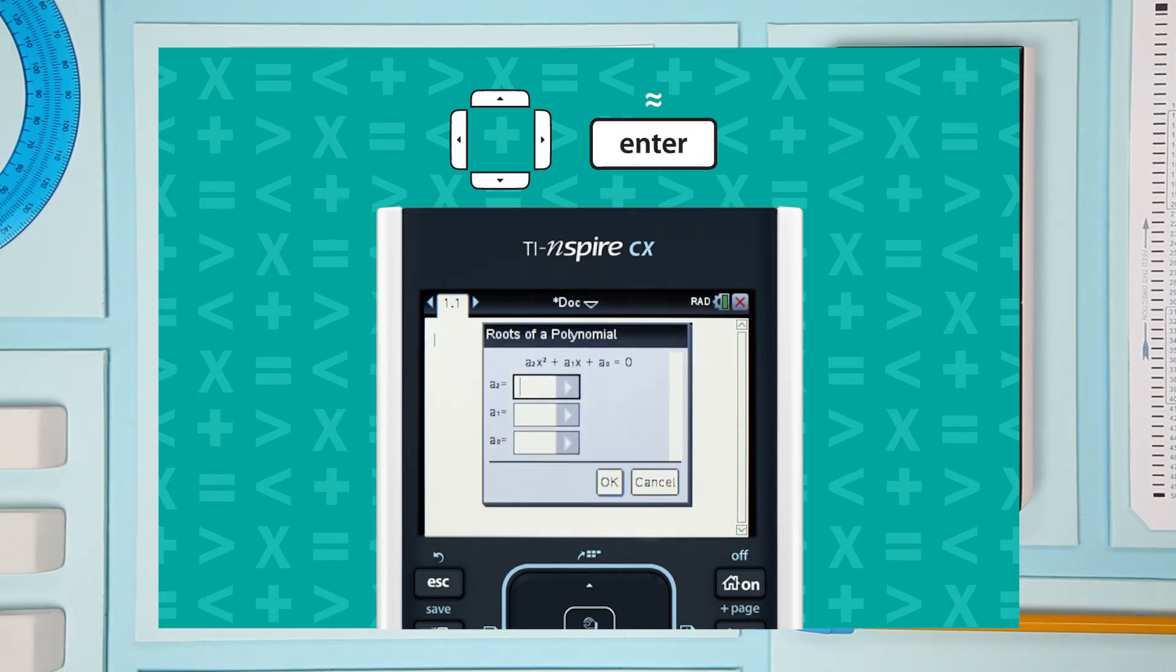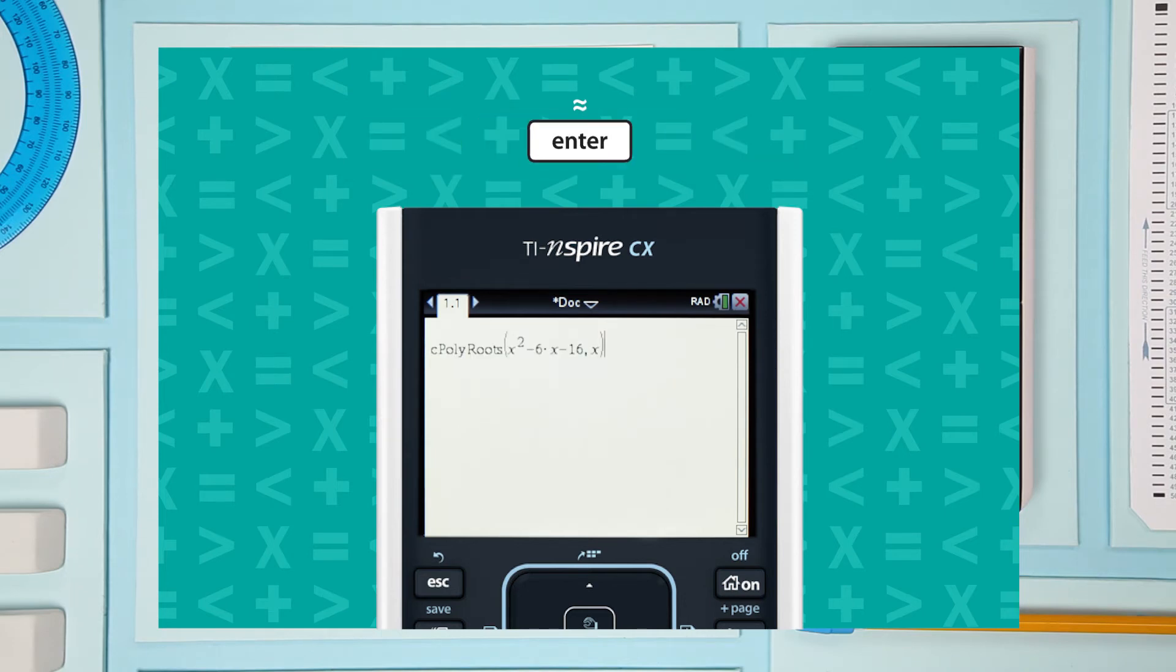Select OK to open the next dialog box and plug in your coefficients. 1, -6, and -16. Select OK. There's the equation. Press Enter. And now you have the roots. Negative 2 and 8.